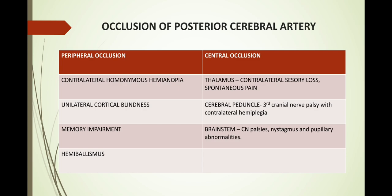If the posterior cerebral artery is occluded, peripheral occlusion produces contralateral homonymous hemianopia, unilateral cortical blindness, memory impairment, and hemiballismus. Central occlusion in the thalamus produces contralateral sensory loss and spontaneous pain. If it occurs at the cerebral peduncle, there is third cranial nerve palsy with contralateral hemiplegia. If it occurs at the brain stem, there are cranial nerve palsies, nystagmus, and pupillary abnormalities.